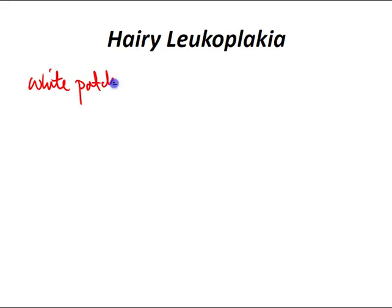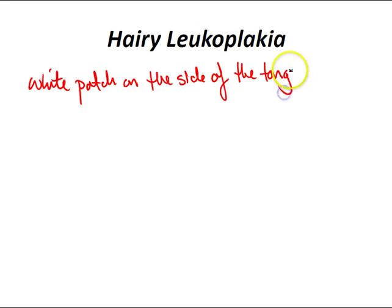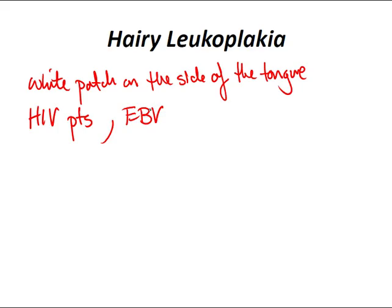Hairy leukoplakia is a white patch on the side of the tongue. It is seen in severe defects of immunity, particularly in HIV patients. The cause is an opportunistic infection by the EBV virus. The condition does not cause other symptoms and does not require treatment. If treatment is required, acyclovir is the drug of choice.